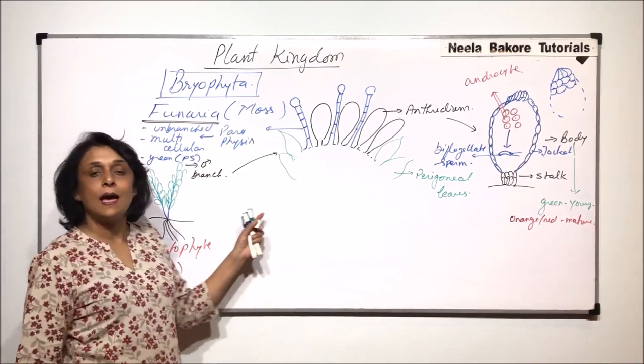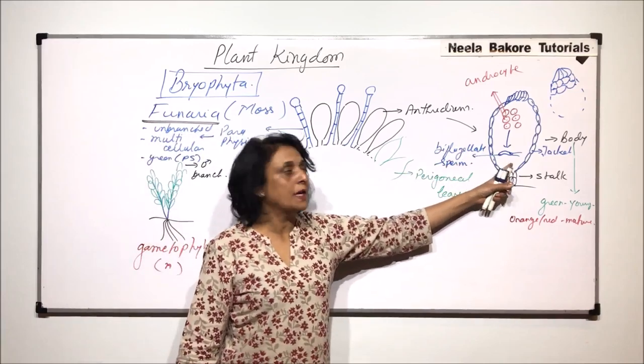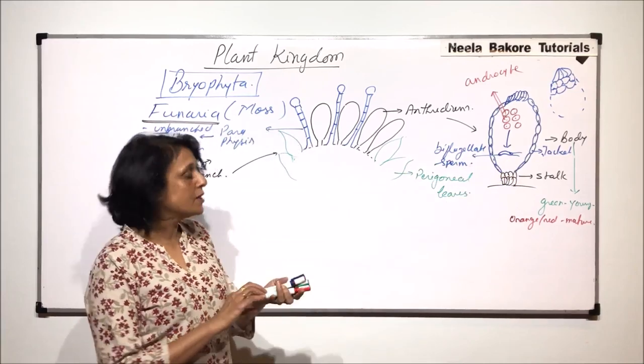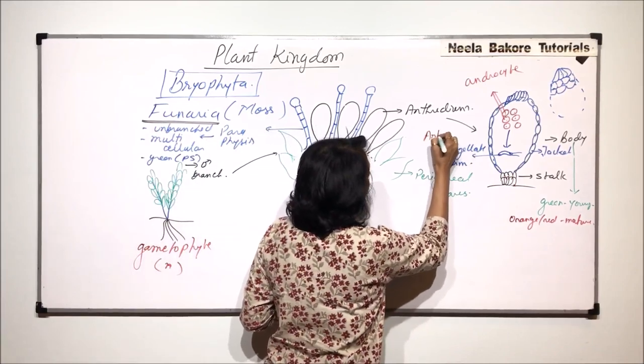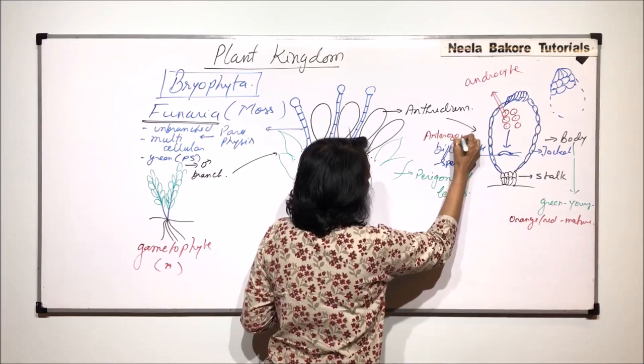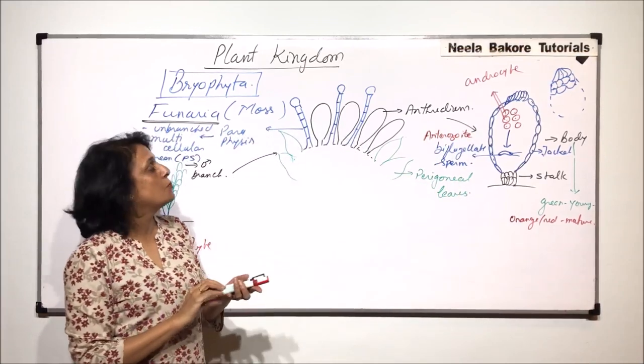They simply get differentiated and form the male gamete or the sperm. The male gamete or sperm is also known as antherozoid. Either antherozoid or the sperm.